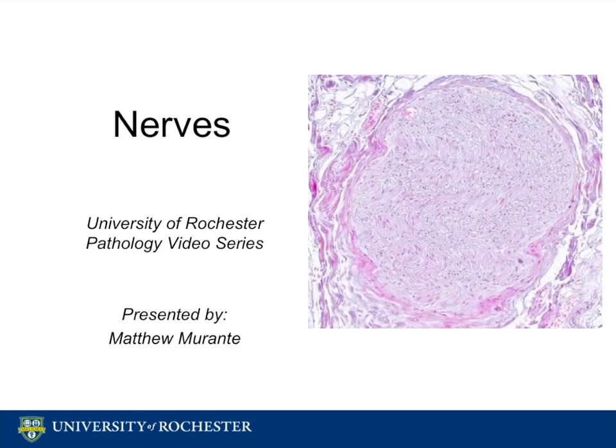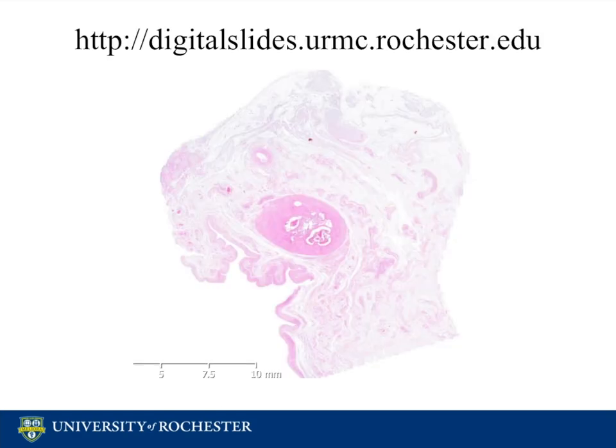Welcome to the University of Rochester Pathology video series. This video reviews the normal histology of nerves. Using the nanozoom digital pathology slides available in the U of R histology folder, we will examine the microscopic anatomy of nerves. Feel free to locate slide 19 and follow along as we explore the spermatic cord cross section, which we will examine since there are abundant nerves in this region.